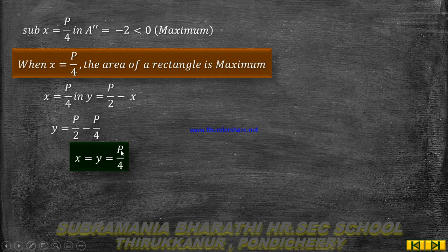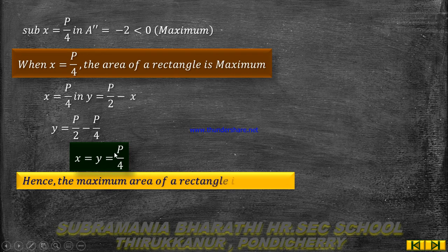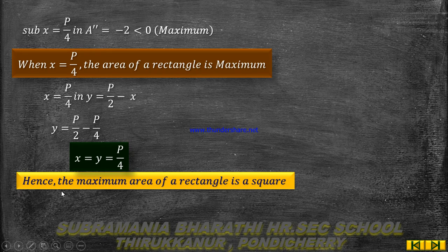When x = P/4, then y = P/2 - x = P/2 - P/4 = P/4. Since x = y = P/4, the length equals the breadth. Therefore, the maximum area rectangle with a given perimeter is a square.